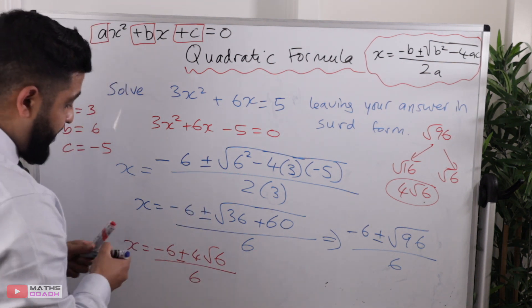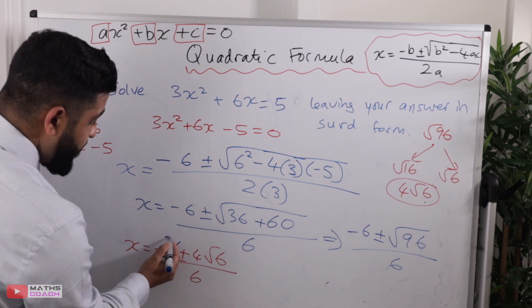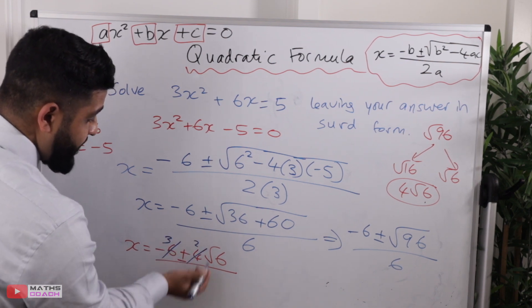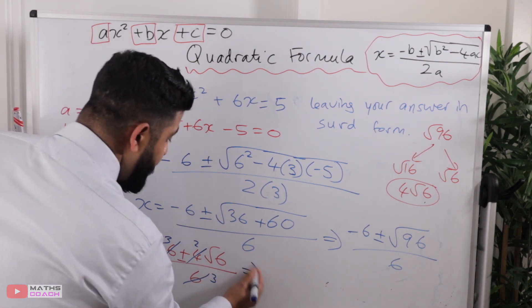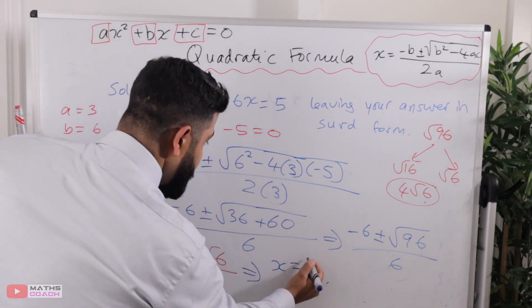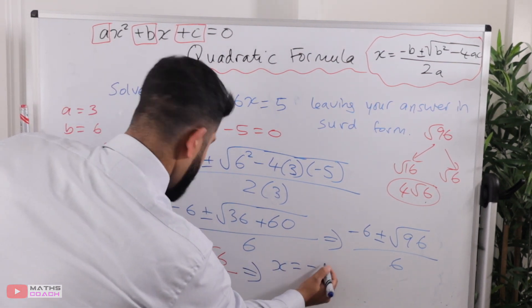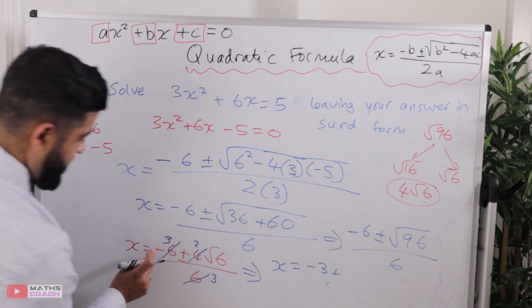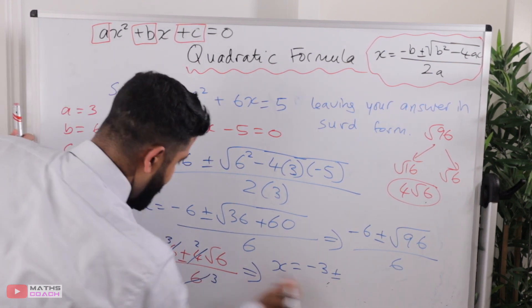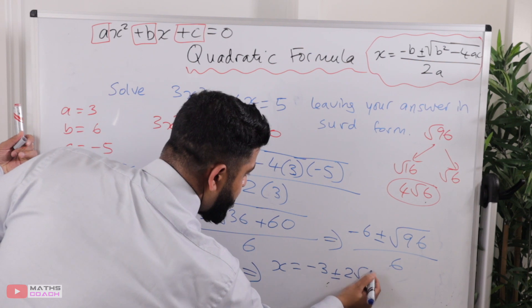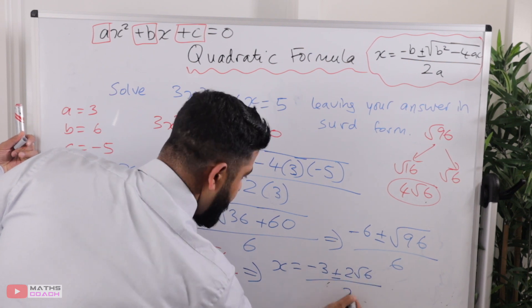That divided by 2 gives us 3. That divided by 2 gives us 2. That divided by 2 gives us 3. So the final answer would be x equals minus 3 plus and minus 2 root 6 all over 3.